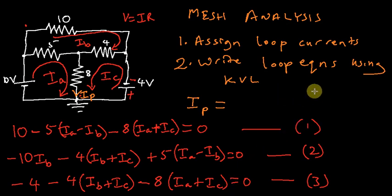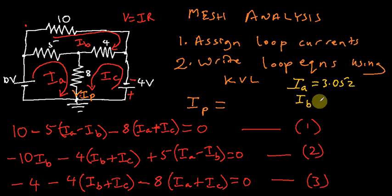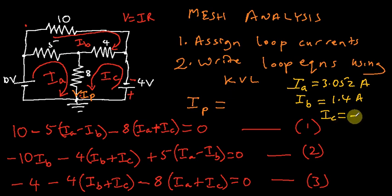If you attempted the solution yourself, you should have arrived at IA equal to 3.052 amperes, IB equal to about 1.4 amperes, and IC equal to negative 2.835 amperes. So you should have arrived at these values.